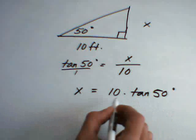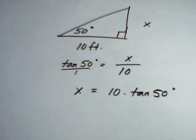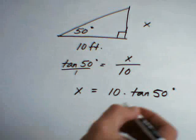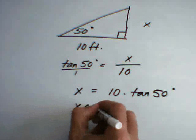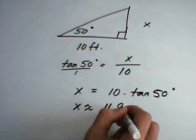Now, we can put this into the calculator. 10 multiplied by the tangent of 50 degrees. And we get approximately that x is 11.9 feet.